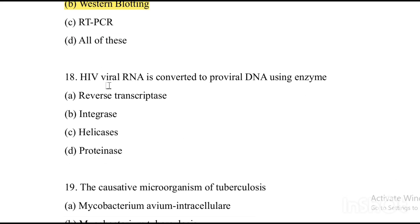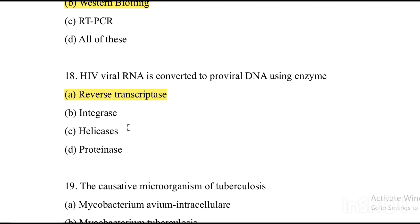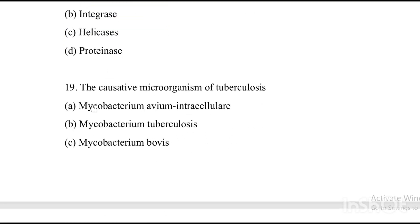Next question: HIV viral RNA is converted to proviral DNA using — Option A: reverse transcriptase. Option B: integrase. Option C: endonucleases. Option D: proteinase. The answer is Option A, reverse transcriptase.